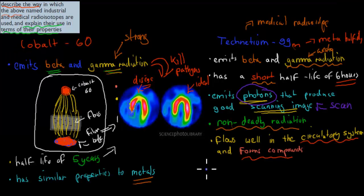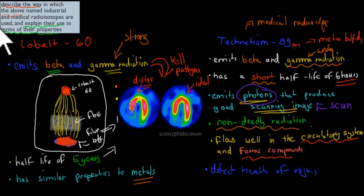Technetium-99 was used to detect organ health and monitor blood flow. It was a good radioisotope because we could use it to produce scanning images because of those photons. Overall it had a short half-life, which meant we could get rid of it quickly. Also, it was non-deadly, which is useful because we don't want a deadly radioisotope in our body.